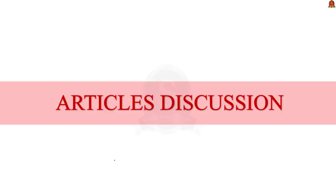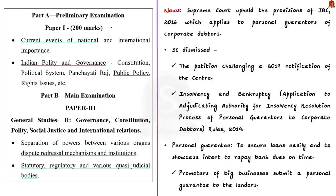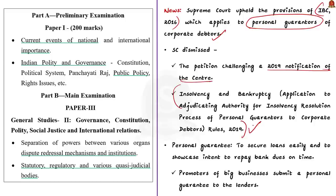Now let us move to the articles discussion. The first topic is regarding personal guarantors being liable for corporate debt, says the Supreme Court. In a significant development, the Supreme Court has upheld the provisions of the Insolvency and Bankruptcy Code 2016, which applies to personal guarantors of corporate debtors. The bench dismissed the petition challenging a 2019 notification of the Centre and the insolvency and bankruptcy rules of 2019.